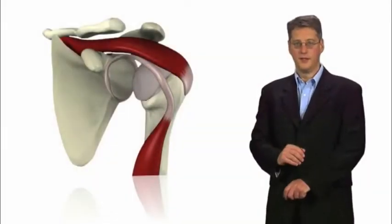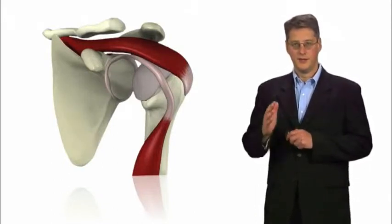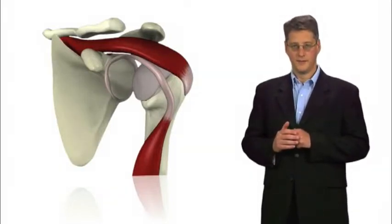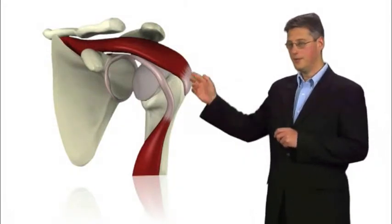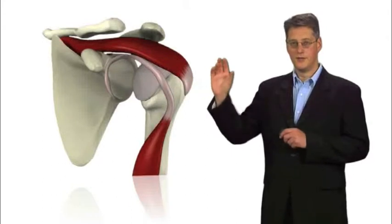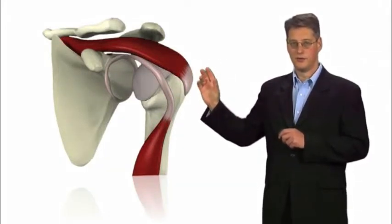I'm going to tell you a little bit about the glenoid labrum of the shoulder and injuries associated with it. So what is the labrum? The labrum is a structure that surrounds the socket of the ball and socket joint of the shoulder.